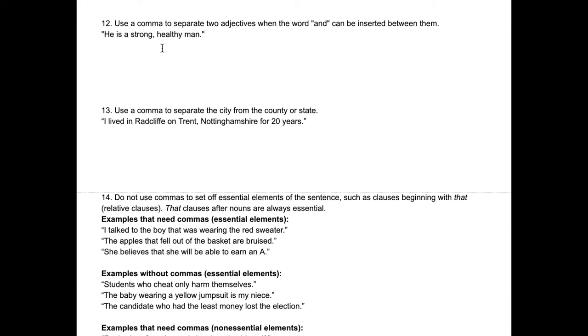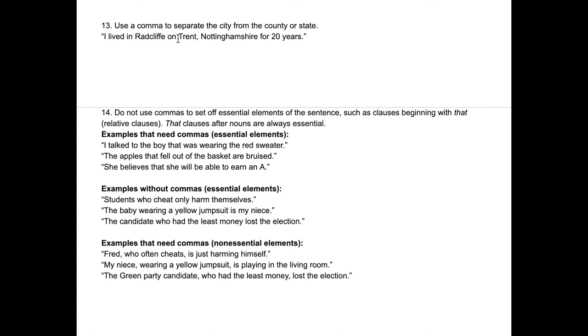Rule thirteen: you're also going to have a comma between a city and a state. For example, "I live in Melbourne, Florida." Or: "This person lives in Trent, Nottinghamshire."